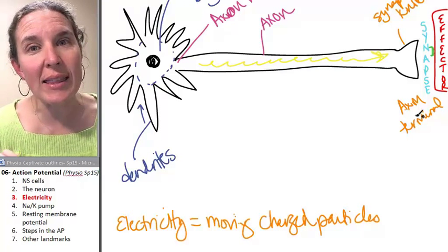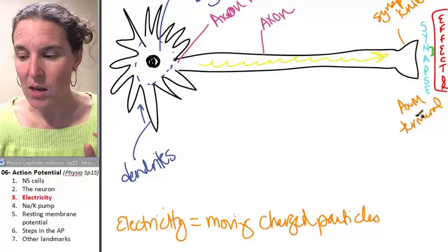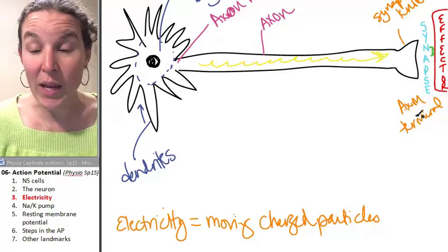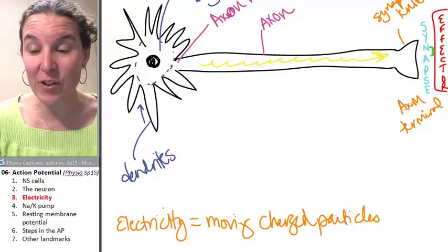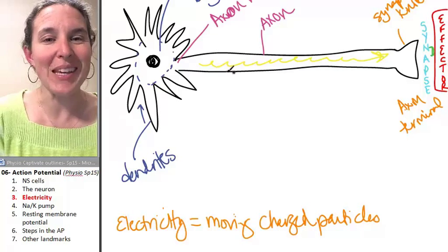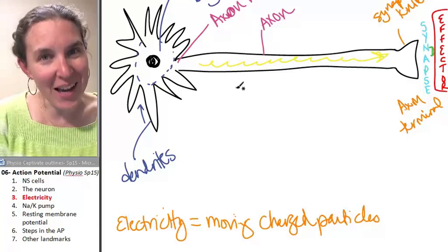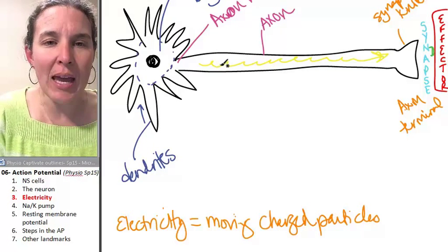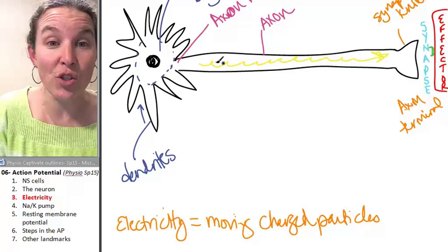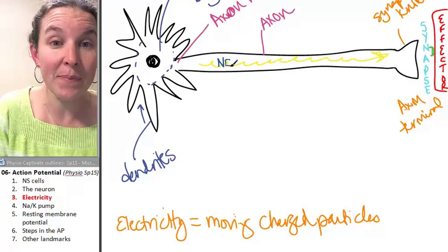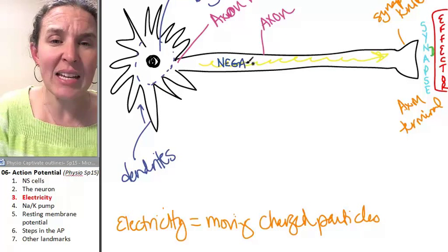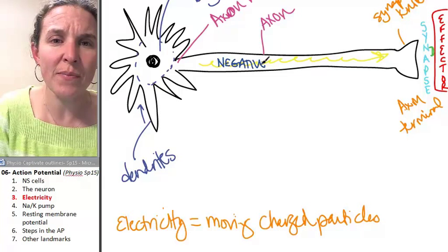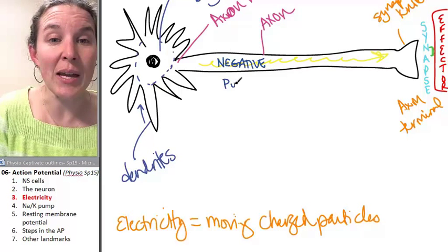So if we're going to get that to happen, somehow we have to set up a difference in charge from the inside of the neuron to the outside of the neuron. So somehow we have to say, okay, you know what? We're going to make the inside of the neuron super negative, negatively charged compared to the outside. We're going to make it positive.